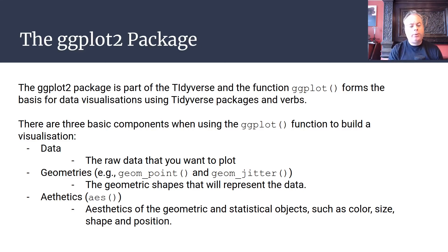And then we've got the third thing, which are the aesthetics. The aesthetics of the geometric and statistical objects define the color, the size, the shape, and the position. But these are basically the three key components of a ggplot visualization that you will then use to build your visualizations in this worksheet.